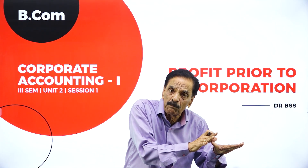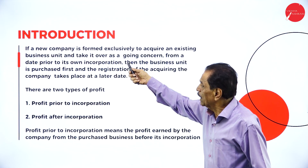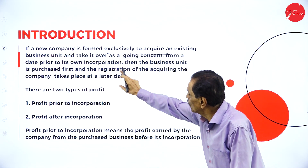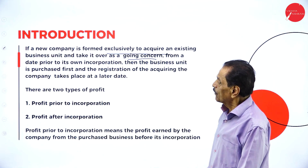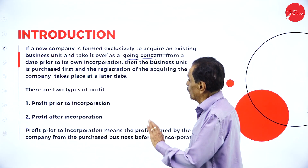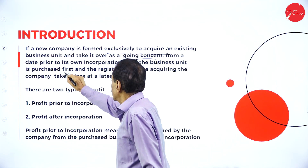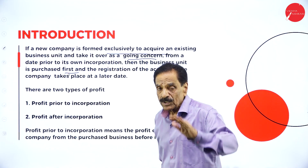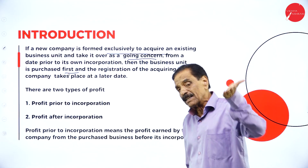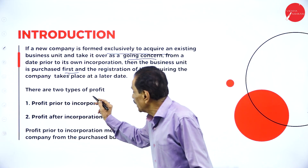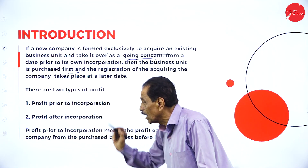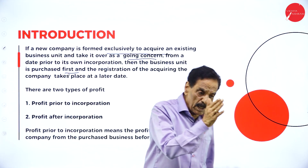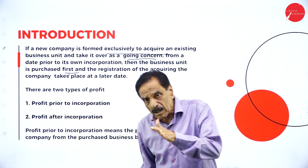If a new company is formed exclusively to acquire an existing business unit and take it over as a going concern from a date prior to its own incorporation, then the business unit is purchased first. This is important — first they acquire and purchase, then the incorporation takes place at a later day, then the year ending. During those days there are two types of profit: profit prior to incorporation and profit after incorporation.